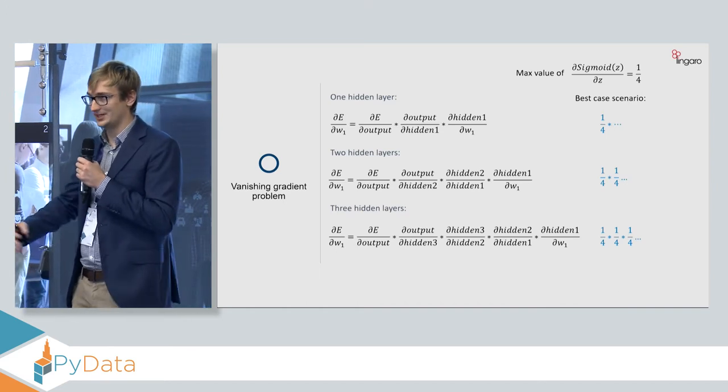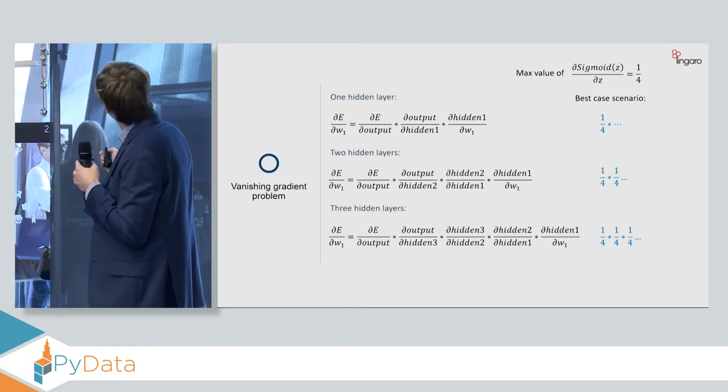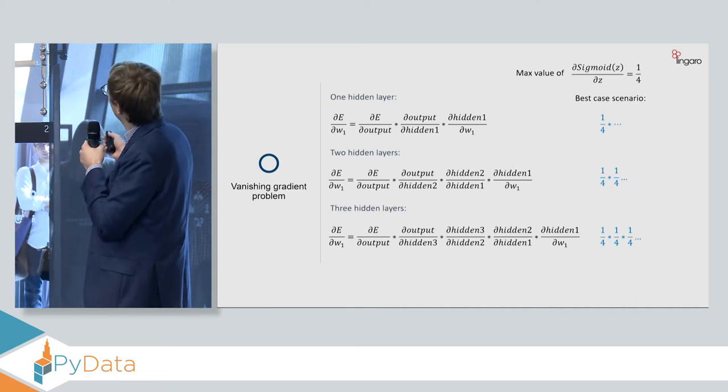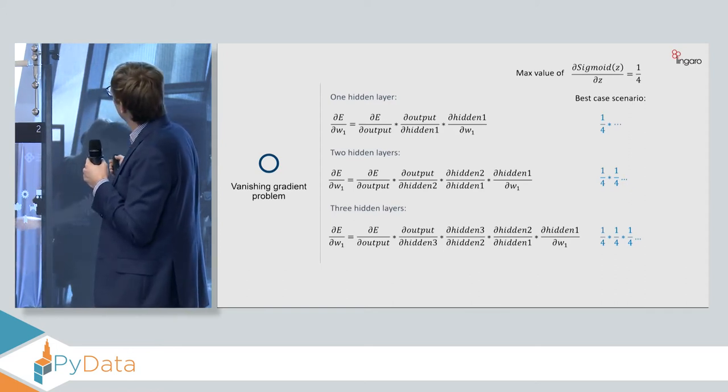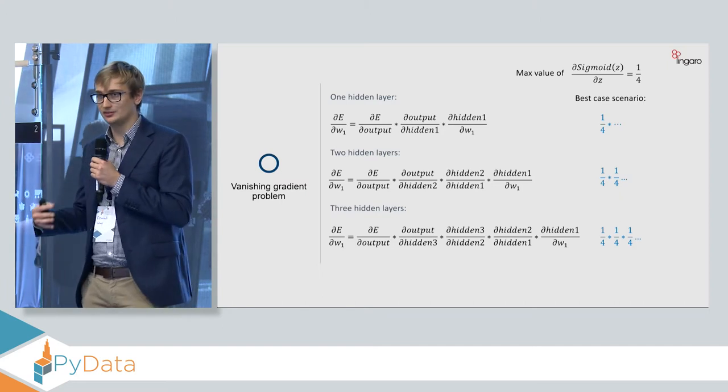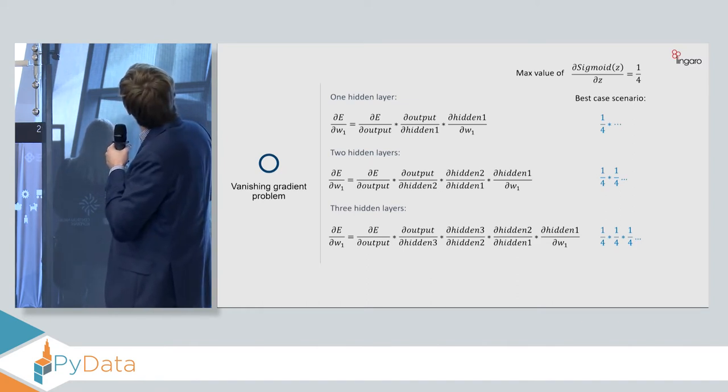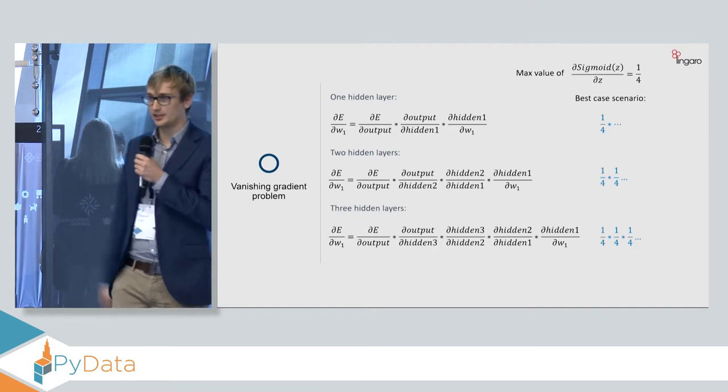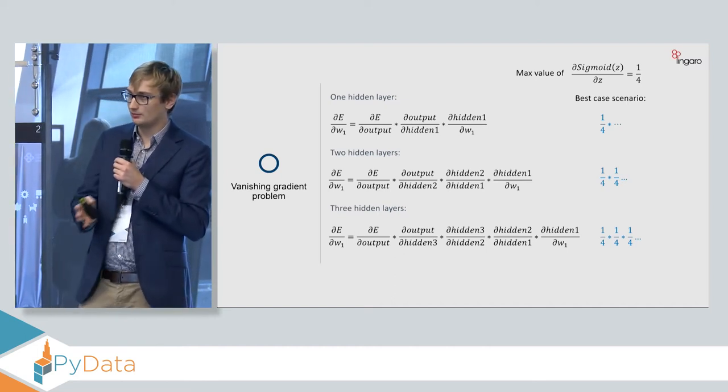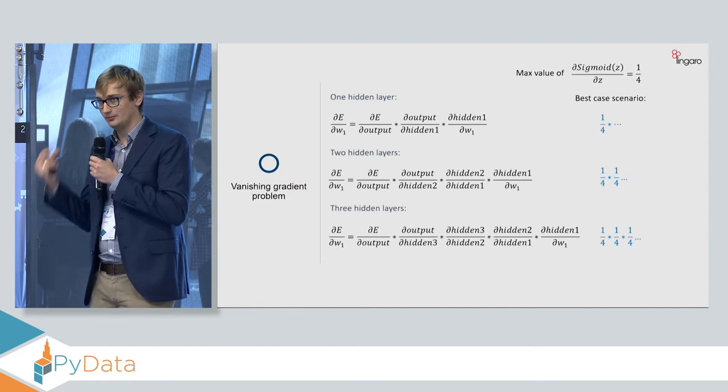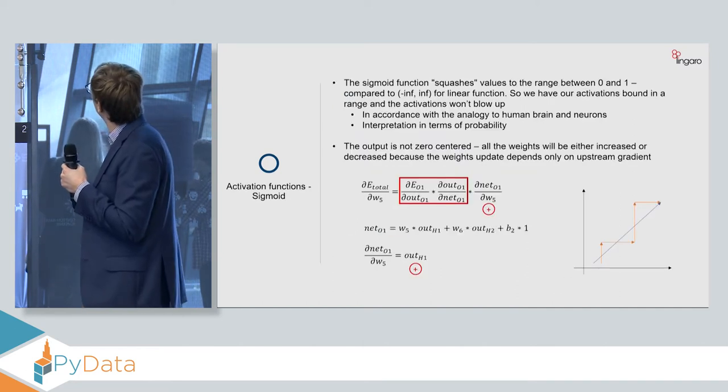This might be a problem when we are trying to resolve a problem, and our net is simply not learning. As I promised, the vanishing gradient problem. So as I told you, the more layers we have, the more times the activation function appears. So looking at an example with three neural networks, each one having more hidden layers, we can see that the more times the activation function appears, the lower the update of the weights will be.